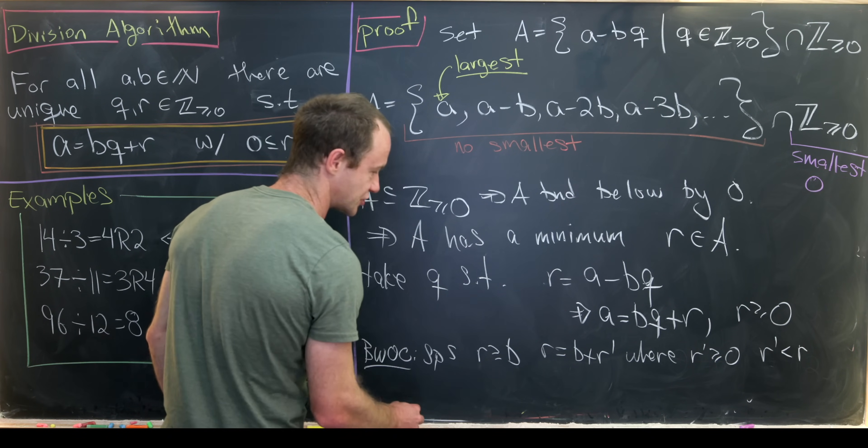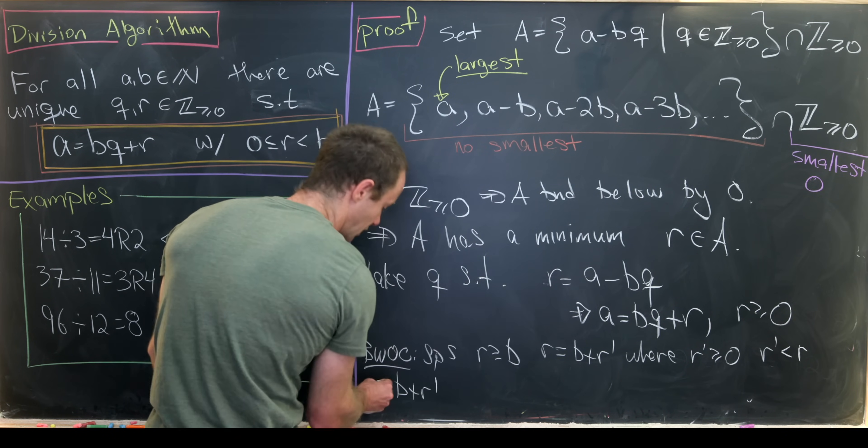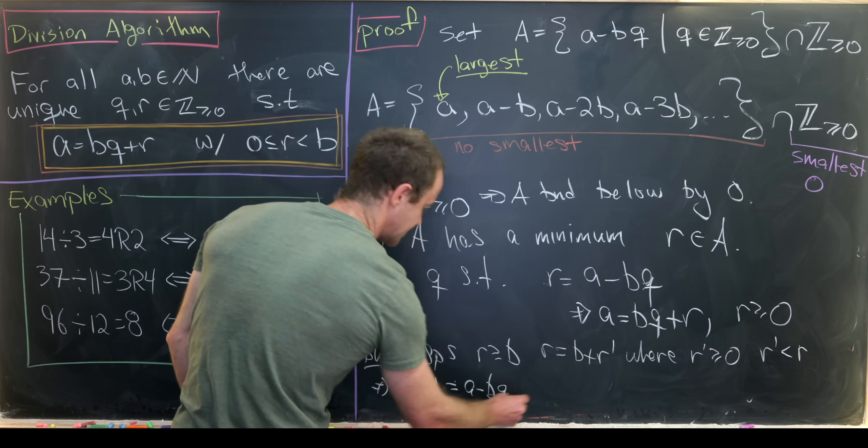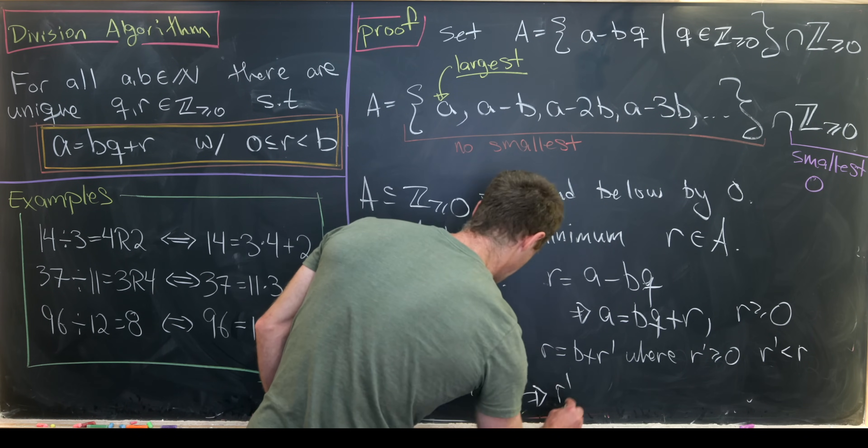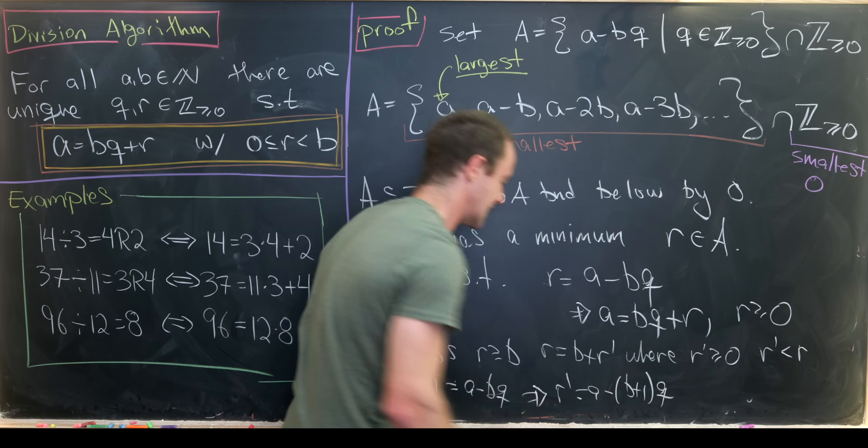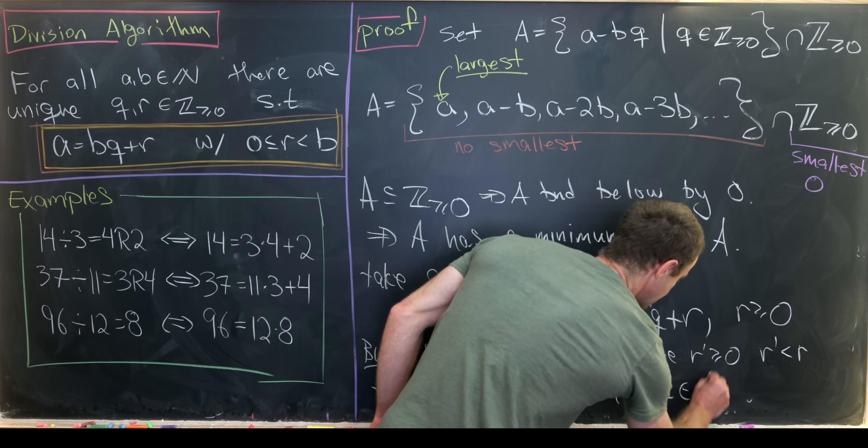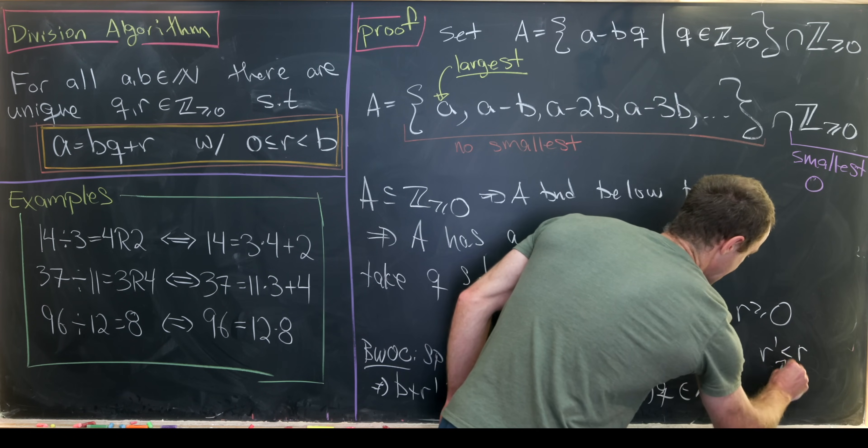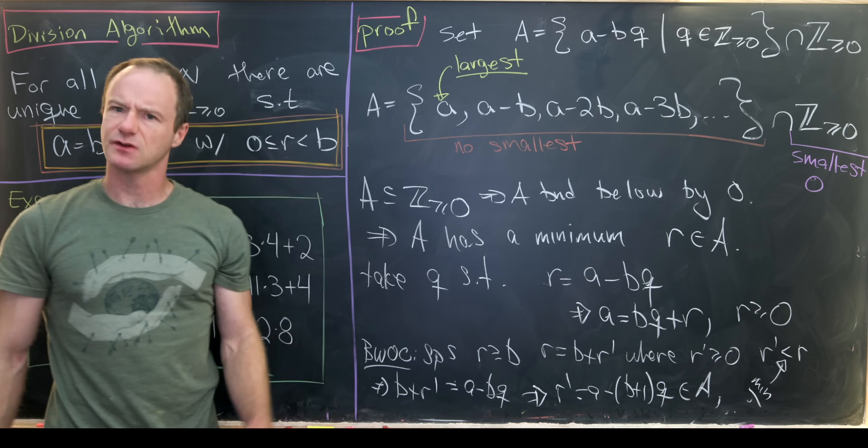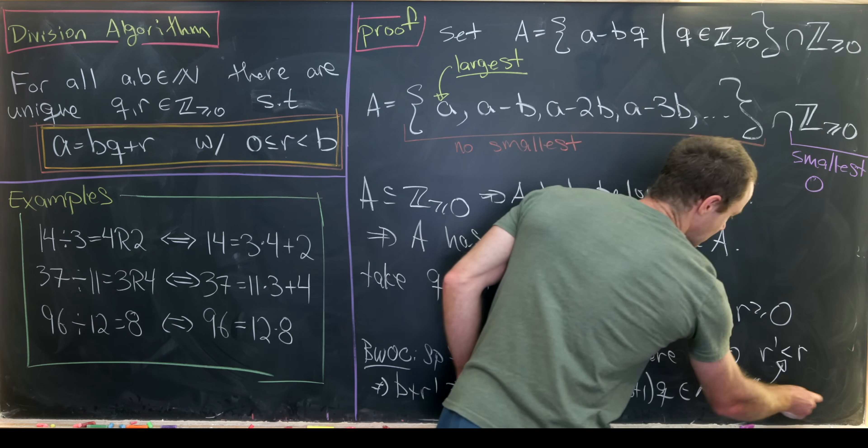And now let's take this version of r here and we'll write b plus r prime instead of this version of r equals a minus b times q. But that means we can write r prime as a minus b times (q plus 1). But that's problematic because that's also within our set, where it is smaller than the minimal element of our set. So obviously nothing can be smaller than the minimal element of our set. So we've reached a contradiction.